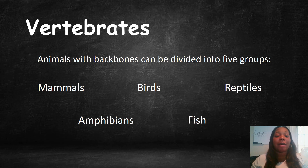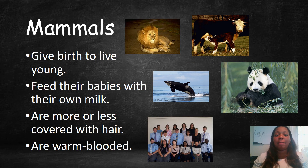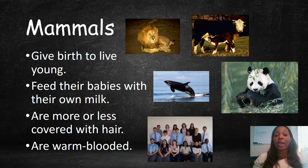Vertebrates are animals with backbones, and they can be divided into five groups: mammals, birds, reptiles, amphibians, and fish. Let's begin with mammals. Mammals give birth to live young, they feed their babies with their own milk, they are more or less covered with fur, and are warm-blooded. Some examples are lions, cows, whales, pandas, and yes, humans.